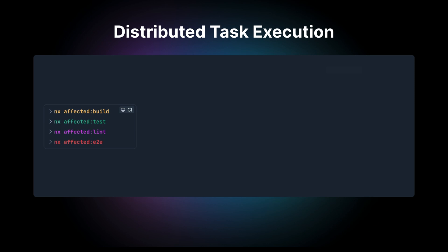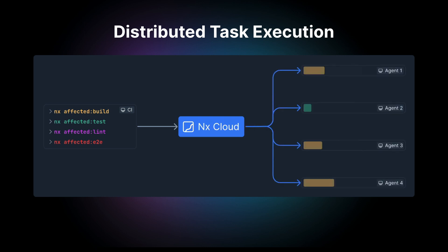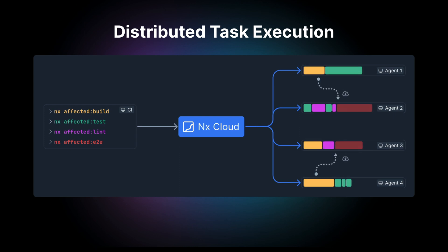Remote caching is just one feature of NX Cloud. It can bring you a very long way, but it really shines if you combine it with the ability to leverage the compute power of multiple machines on CI. This is where distributed task execution comes in. Whenever you run multiple tasks on your CI environment, NX Cloud can take those tasks, split them up into smaller fine-grained tasks that need to be executed among different projects, and distribute them across different machines in the most efficient way possible.